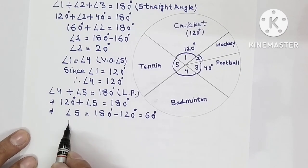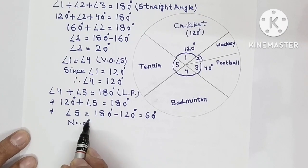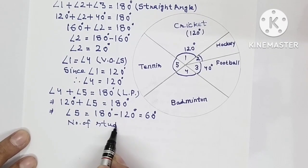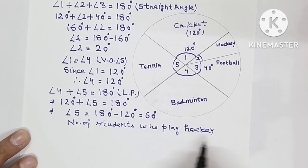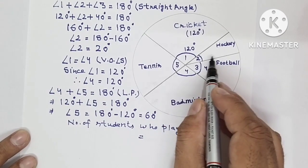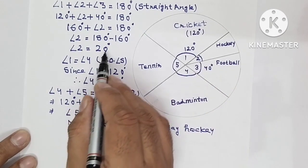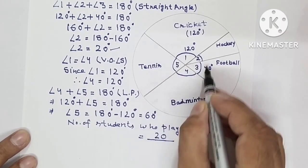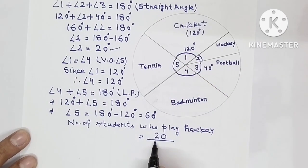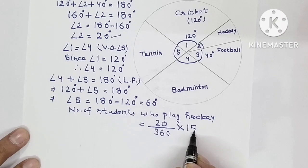So tennis's angle is also 60 degrees. Now you have to write number of students who play hockey. In this what you have to do? See hockey's angle. How many degrees? This is angle two. So angle two is 20 degrees. So you will write 20 upon 360. The sum of all these angles around this point is 360. So you write 360 here, into 1500. How many students were in the school? 1500.